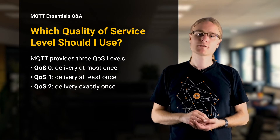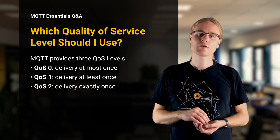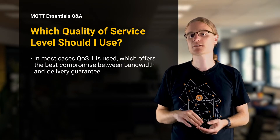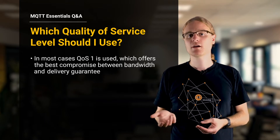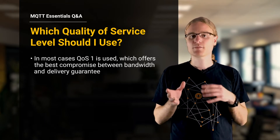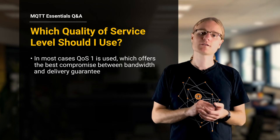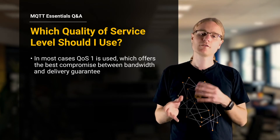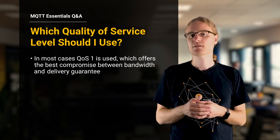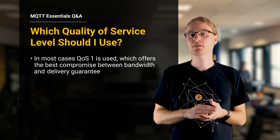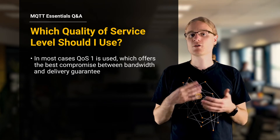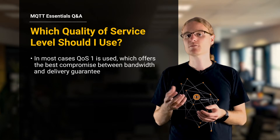The most popular choice for more than 80% of deployments is quality of service level one. Quality of service level one is the best compromise between delivery guarantees, which means at least once a message is delivered, and the bandwidth used, because the message flow is pretty simple.